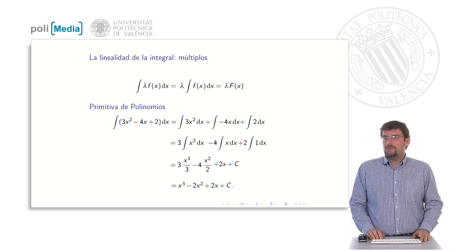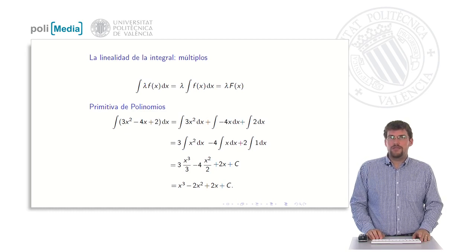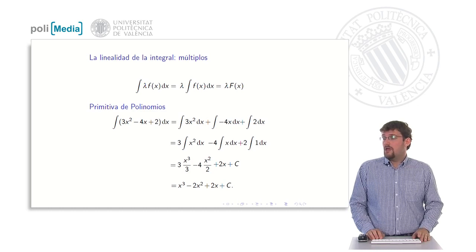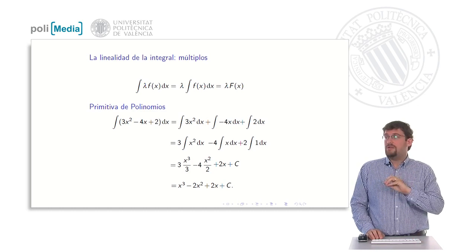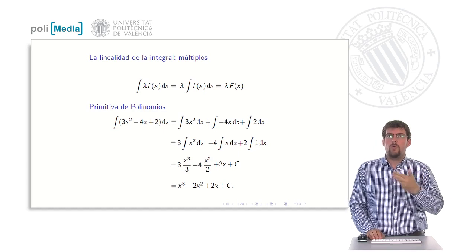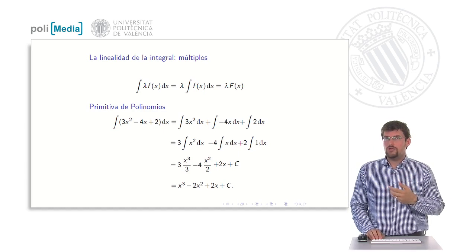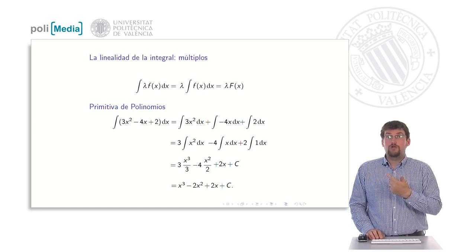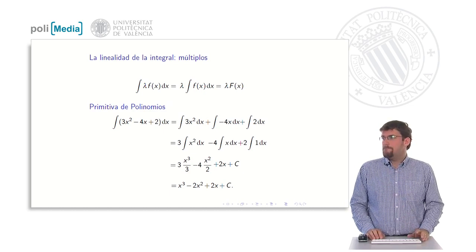It is important to note that it is always necessary to add the constant of integration c, since the first three addends would give us an antiderivative of the function. But the integral is, in reality, the set of all the primitives. And as we already know, that is always an antiderivative plus an arbitrary constant.